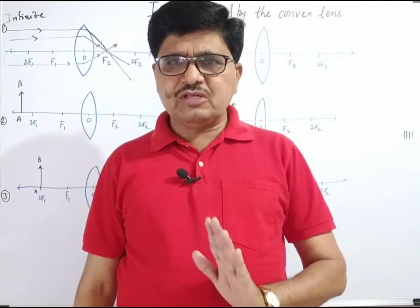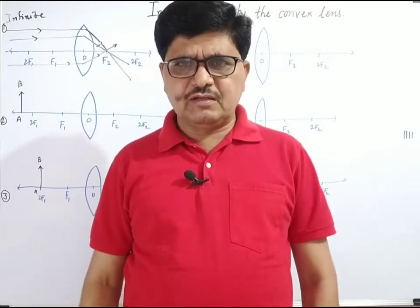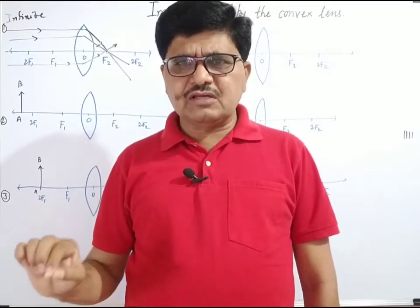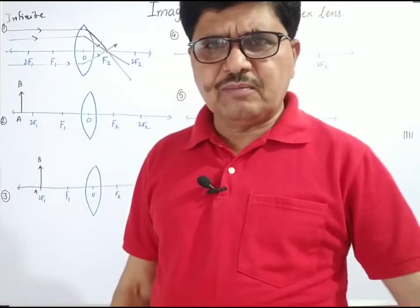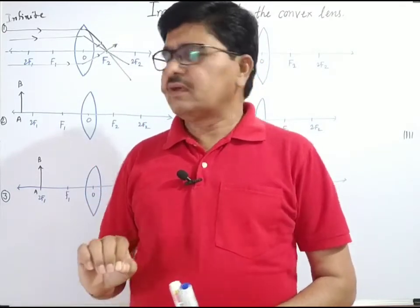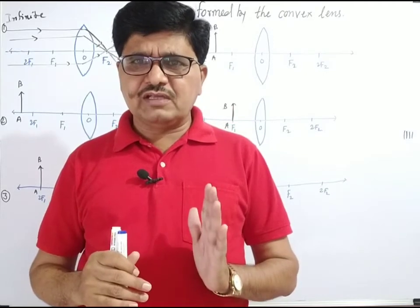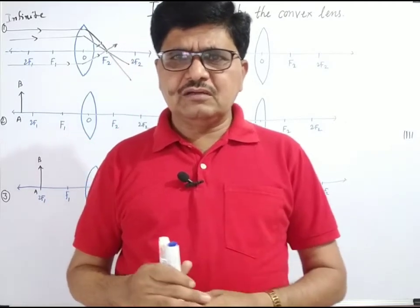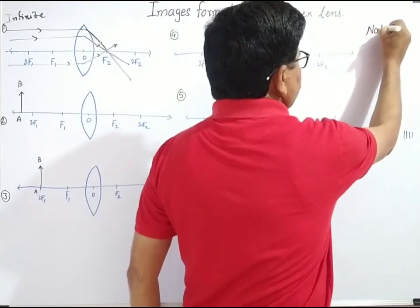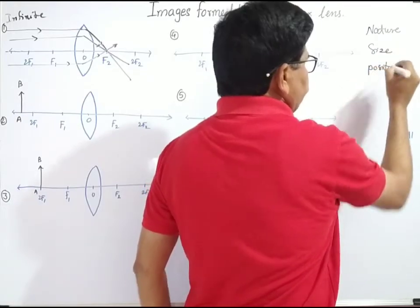Out of these three rays, two will be sufficient to draw the ray diagram of the image of any object. The image is formed by the convex mirror, concave mirror, and convex lens. To determine the nature, size, and position of the image of the object, we need to consider what is the image and what is the position of the image of any object.